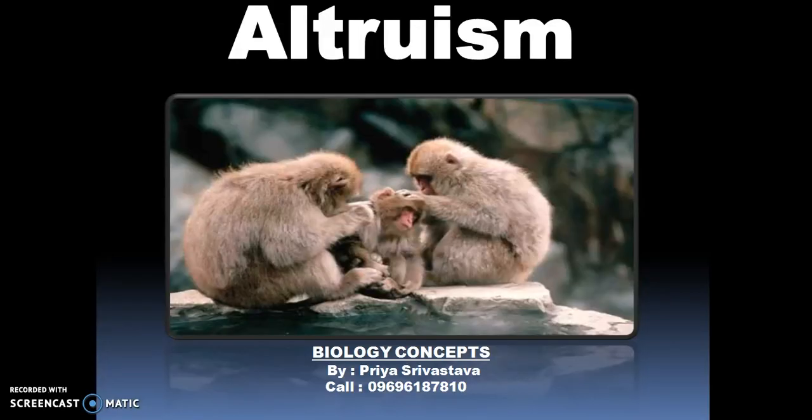Hi friends, today we are going to discuss evolution topic, that is our module three. My topic of discussion is altruism. So what exactly is altruism? It is a phenomenon in which an individual sacrifices its fitness value to increase the fitness of other individuals.